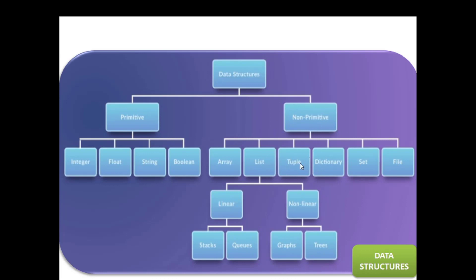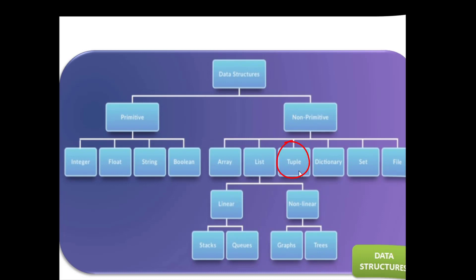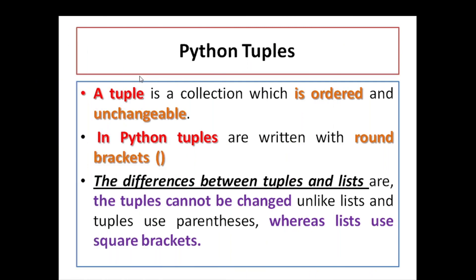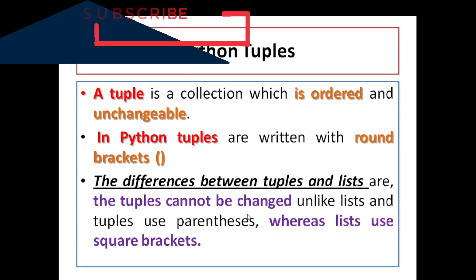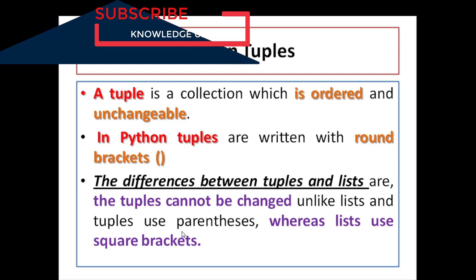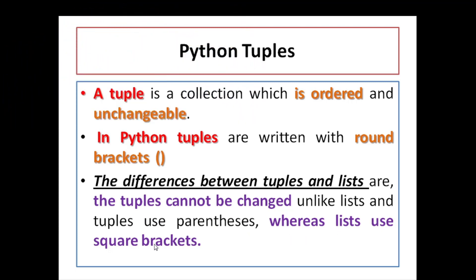In this series of videos about data structures, I taught you in the first video what is array structure, and in the second video what is list structure. Today I try to teach you what is a tuple. A Python tuple is a collection which is ordered and immutable. In Python, tuples are written with round brackets, but the difference between tuples and lists is that tuples cannot be changed, whereas lists use square brackets.